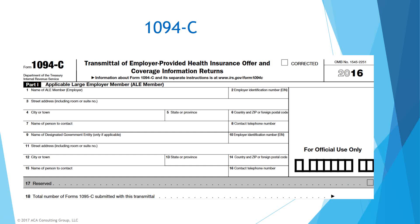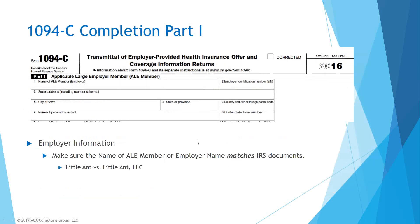The 1094-C form is the transmittal form that goes to the IRS. It covers you as the employer — how many employees you have, whether you were part of an aggregated group with common ownership, and how many forms you're submitting to the IRS. For the employer information section, please make sure the name of the employer matches the documents at the IRS exactly, including the LLC designation, because if you're filing electronically through an HRIS system, those pieces need to match or the file will be rejected.